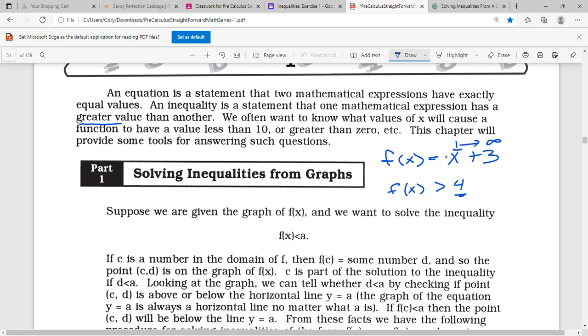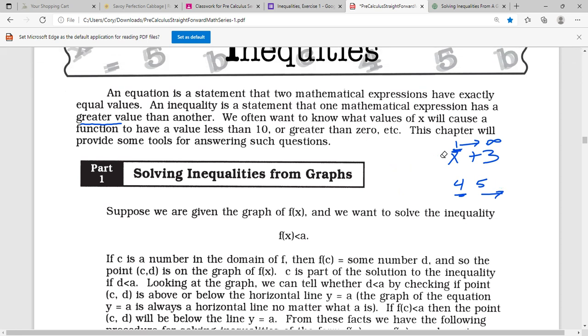1 plus 3 equals 4 would be the lowest one. 2 plus 3 would be 5, 3 plus 3 would be 6, right? So that would go forever that way, but the lowest one would be 1. So that's what we're going to figure out in this chapter is how to use inequalities for functions.